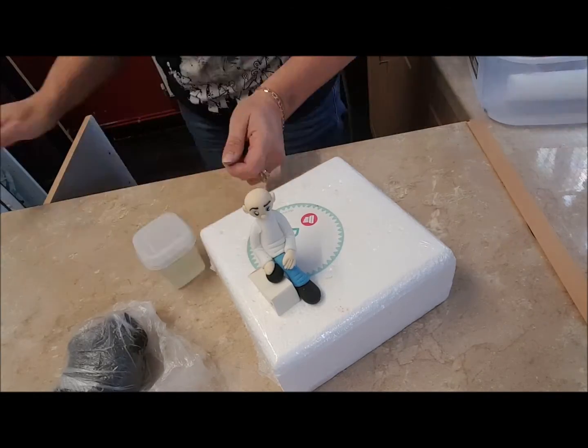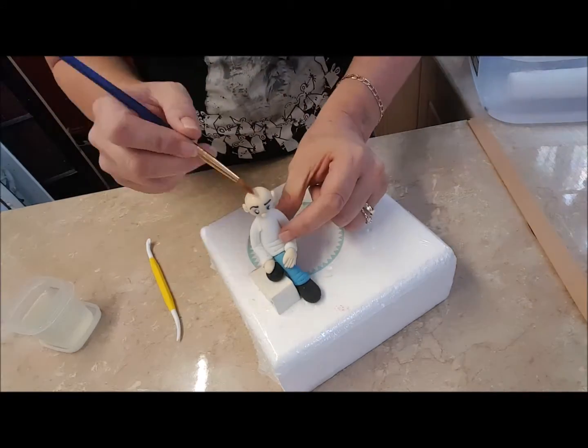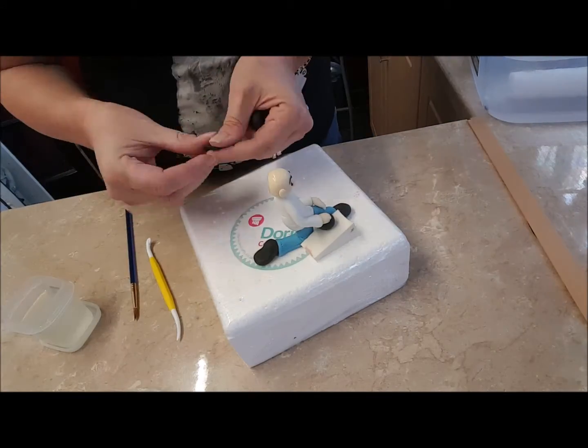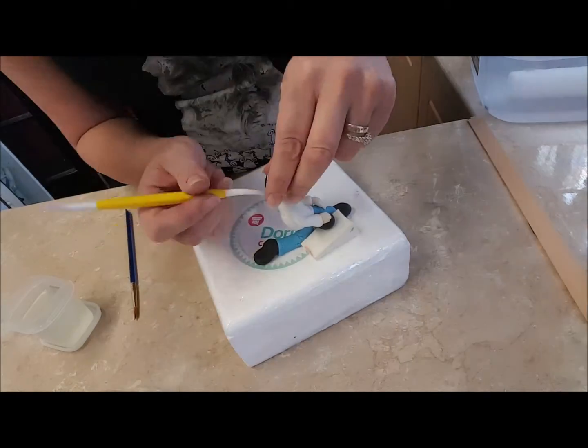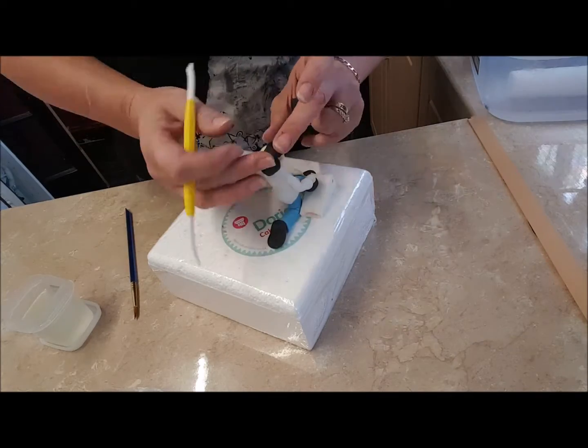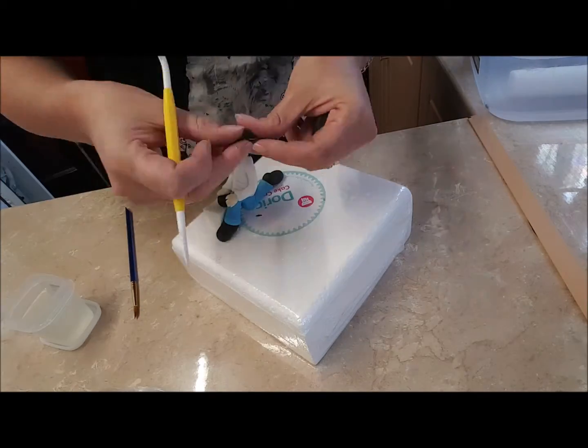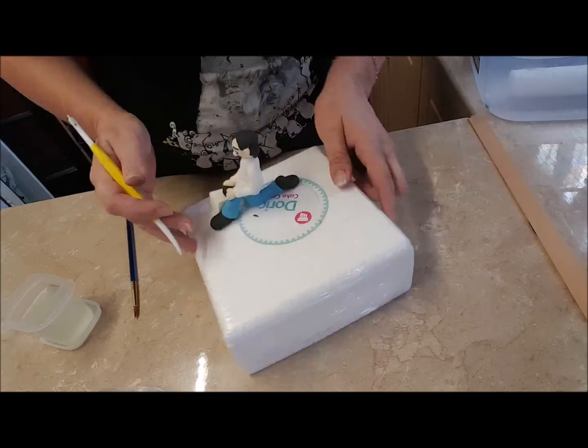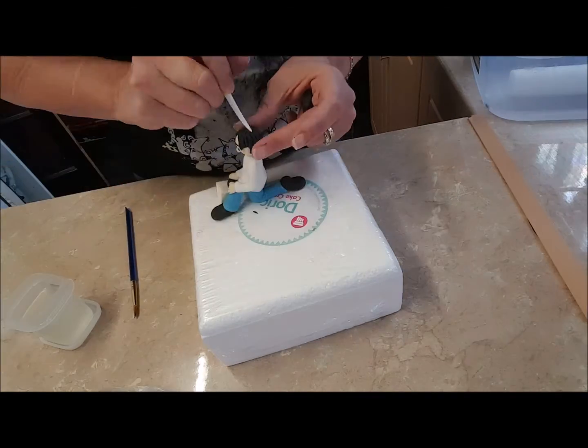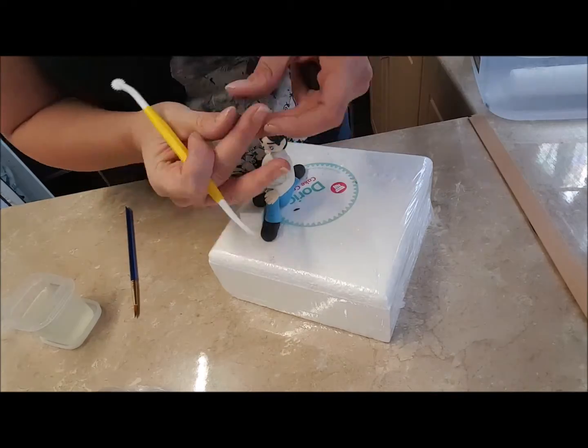This has been setting now and I'm just about to do the black hair. Just put a little bit at the back and use your modeling tool to add the hairlines. Then do the sides. And if you want some at the front, just a little bit at the front.